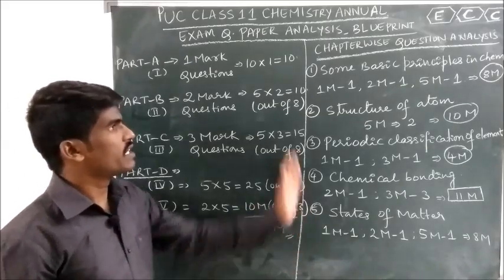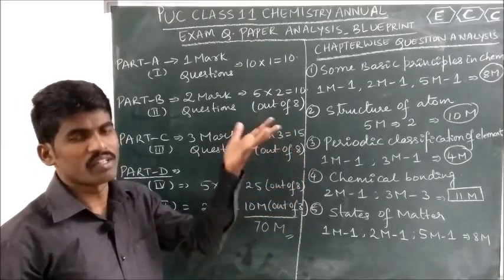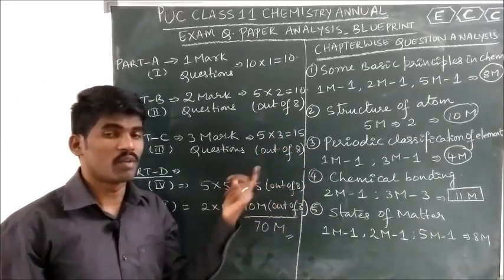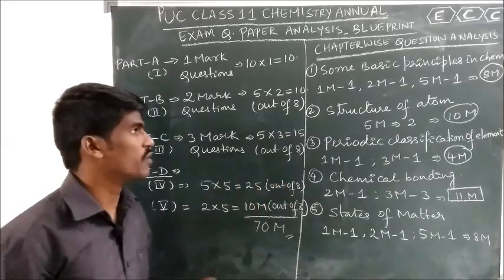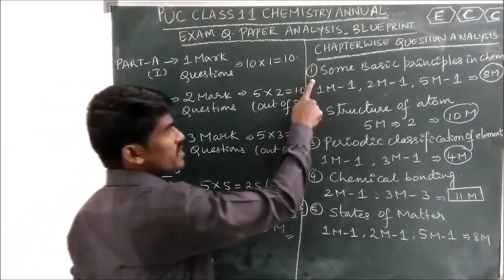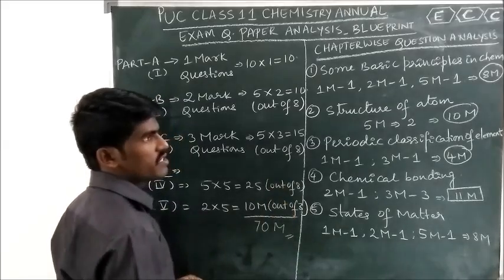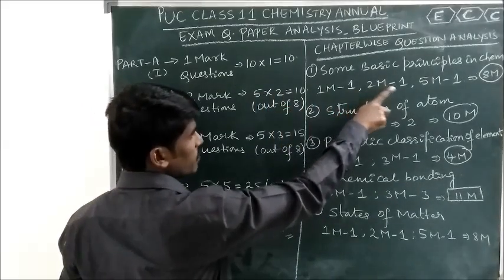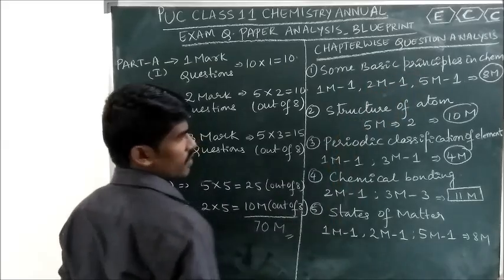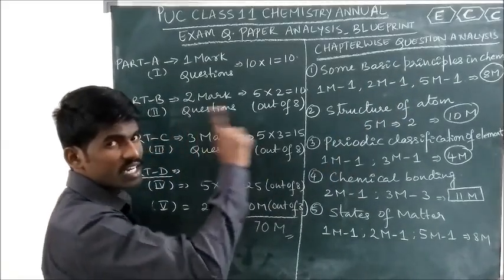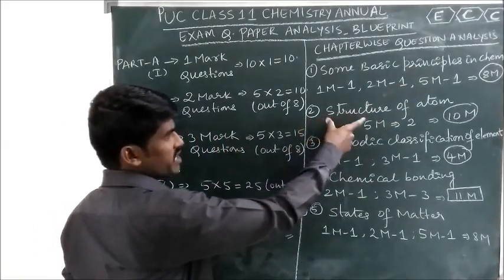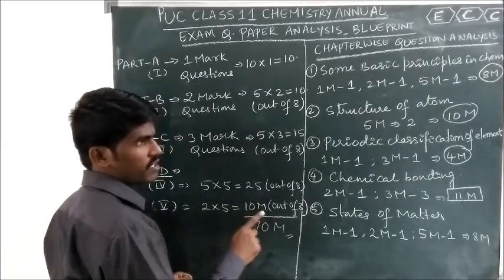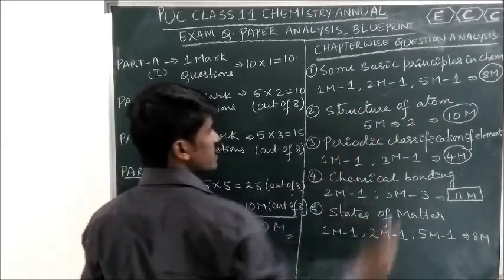Now let's see the question analysis — from which chapter you will get 5-mark, 2-mark, and 1-mark questions. The first chapter, Some Basic Principles in Chemistry, gives 1 one-mark question, 1 two-mark question, and 1 five-mark question. Total weightage of this chapter is 8 marks. The second chapter, Structure of Atom, gives 2 five-mark questions. Total weightage is 10 marks.